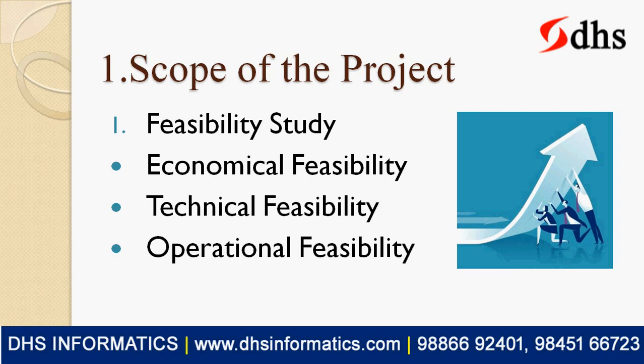Second is Technical Feasibility. For example, 15 to 20 years ago, there was no internet. At travel agencies, they would feed your ticket into a computer, but you could only book from Bangalore to Chennai at the Bangalore office — you couldn't get a Chennai-to-Bangalore ticket from there because there was no centralized system. That is called technical feasibility: when the technology does not support our idea, we can't achieve it.